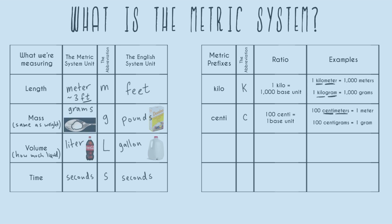Next is milli, abbreviated as a lowercase m. A thousand milli of anything equals one base unit. So a thousand millimeters — the tiniest dash marks on a meter stick — equals one meter. And a thousand milliliters equals one liter. In science experiments, measuring volume in milliliters is very common.